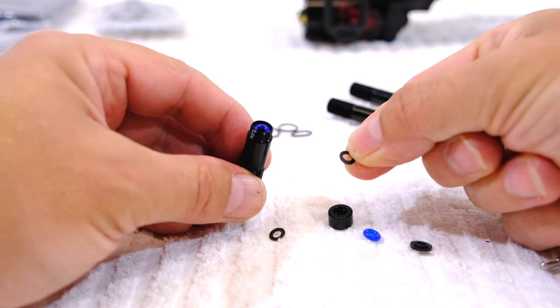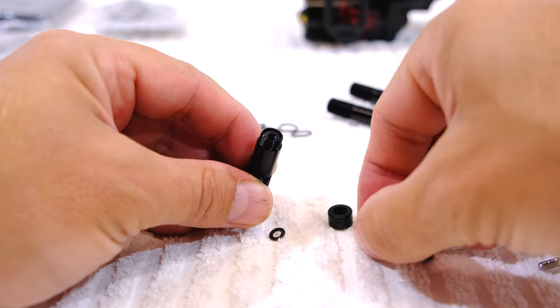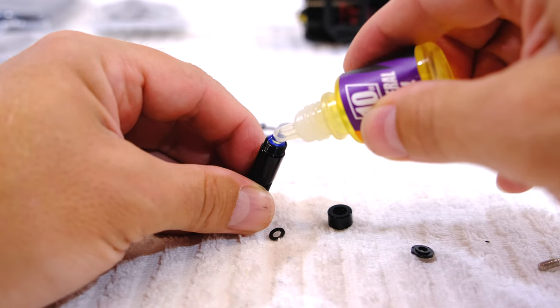These black washers are included but the instructions don't say anything about it where to use them. So I decided to put them between the rubber O-rings to make the shock a little bit tighter.